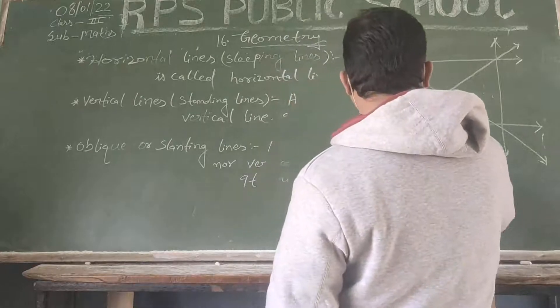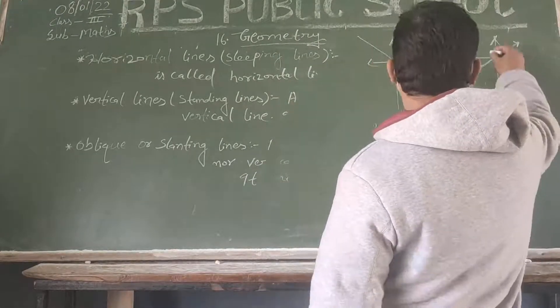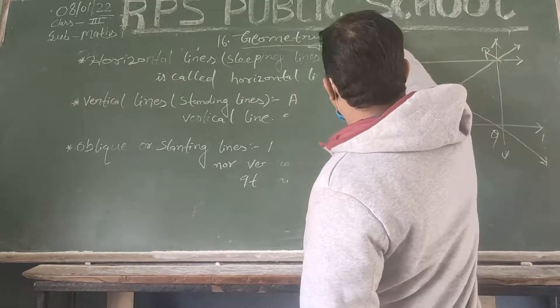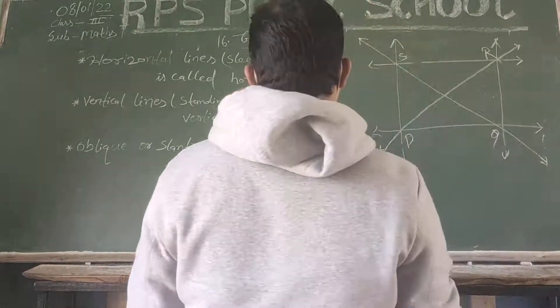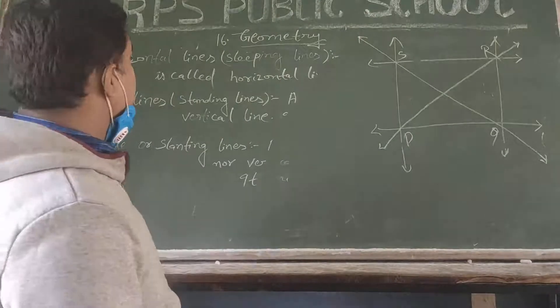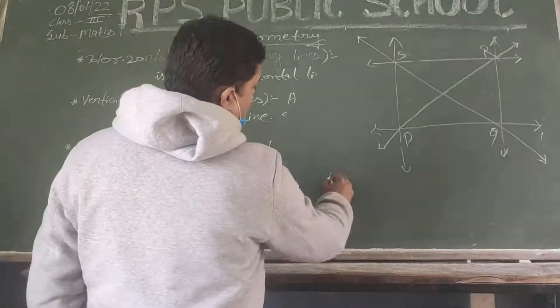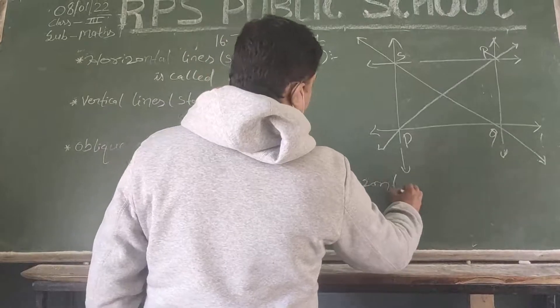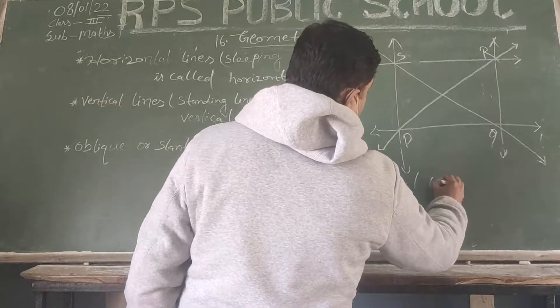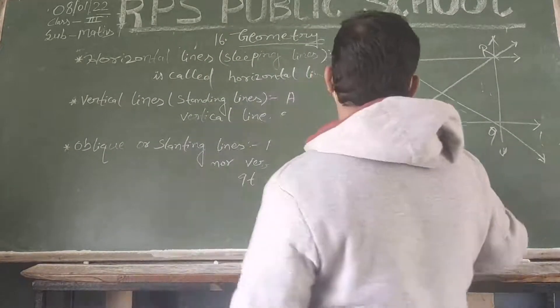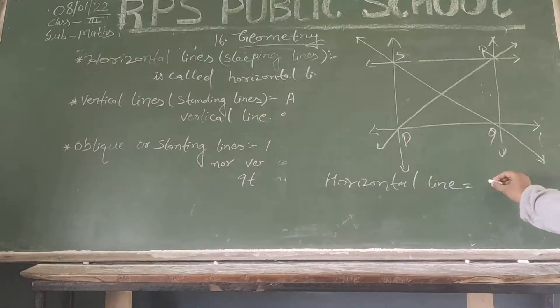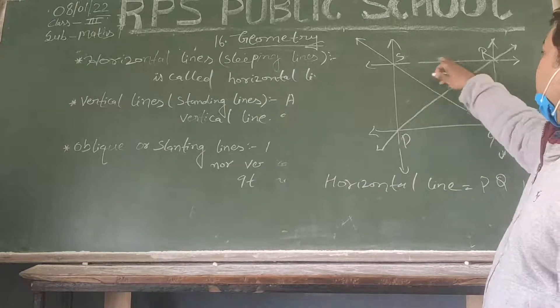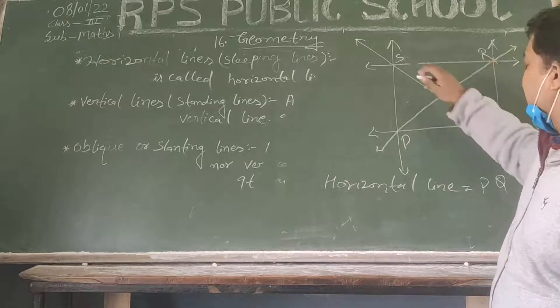This is the P, this is the Q, this is the R and this is the S. So, the horizontal line is P-Q and R-S.